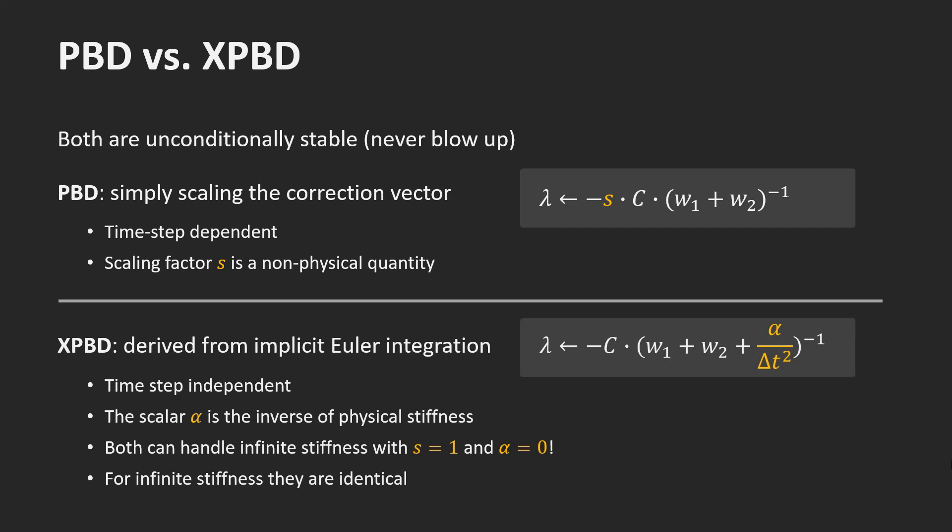As mentioned on the previous slide, alpha is the compliance or the inverse of physical stiffness. Since it is the inverse of physical stiffness, xPBD can also handle infinite stiffness by simply setting alpha to zero. For infinite stiffness, PBD and xPBD are identical. You can try this yourself.